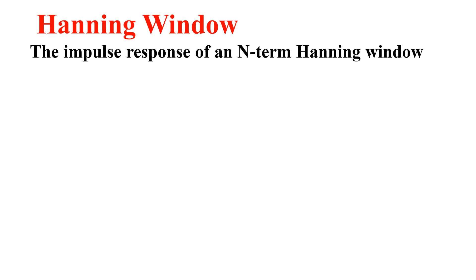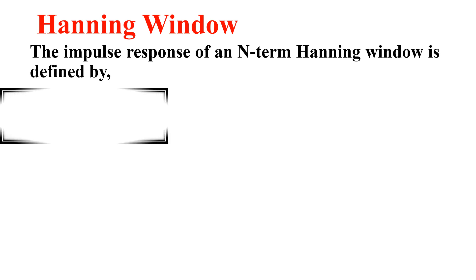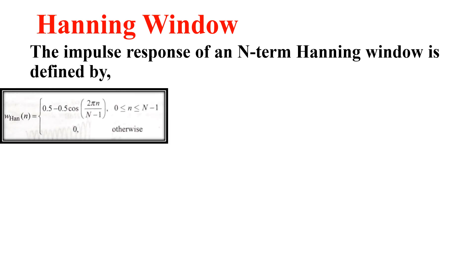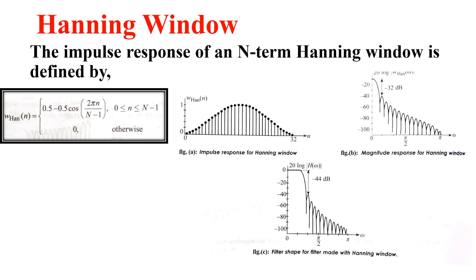The next window is the Hanning window. The impulse response of an N-term Hanning window is defined and represented by this formula: W_Han(n) = 0.5 minus 0.5 cosine of (2πn / (N minus 1)), where N varies from 0 to N minus 1, and it is 0 otherwise. Figure A represents the impulse response, Figure B the magnitude response, and Figure C the filter shape for a filter made with the Hanning window.